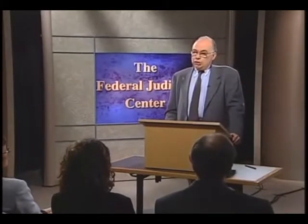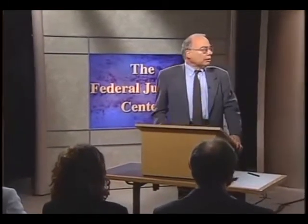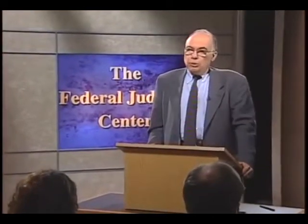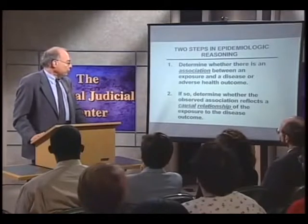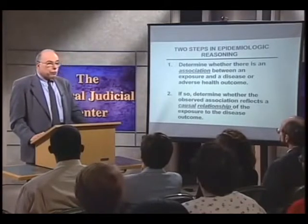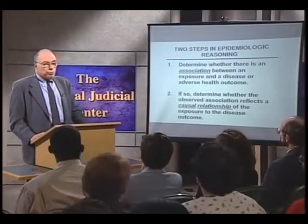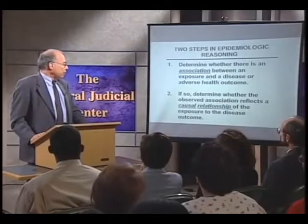How do epidemiologists go about their work? We basically have a two-step process. First, we try to determine whether there is an association between an exposure and a disease or adverse health outcome. If we demonstrate that there is such an association, we then try to determine whether the observed association reflects a causal relationship between the exposure and the health outcome.